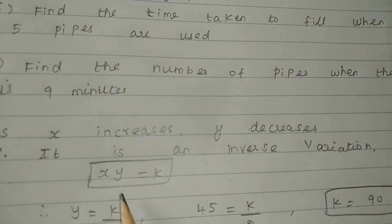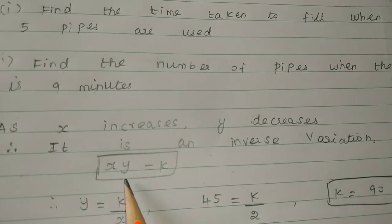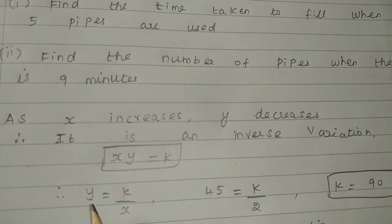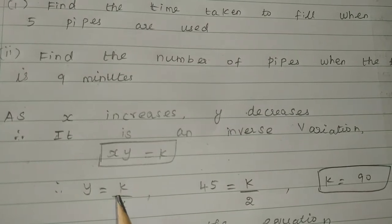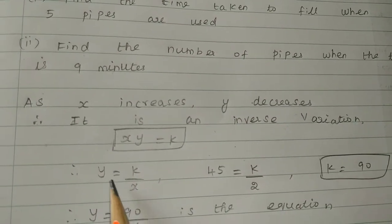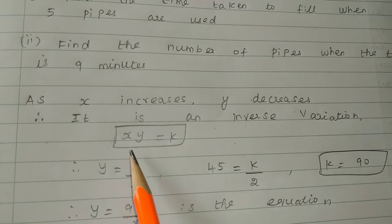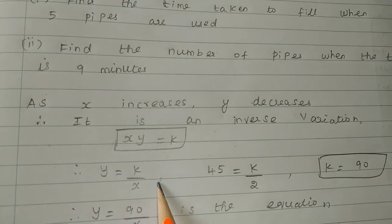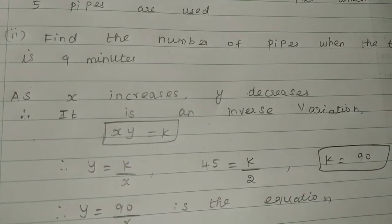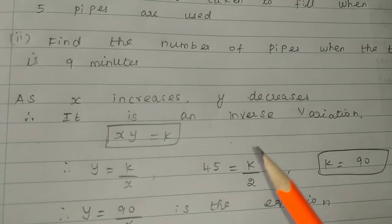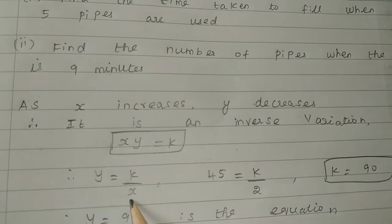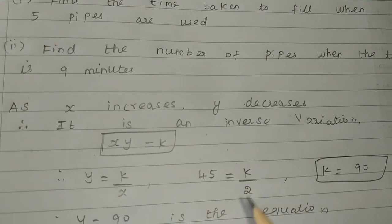Inverse variation. So inverse variation is the equation: X times Y is equal to K. The equation form is Y is equal to K by X. That is constant. We will see the X and Y values and find the constant.